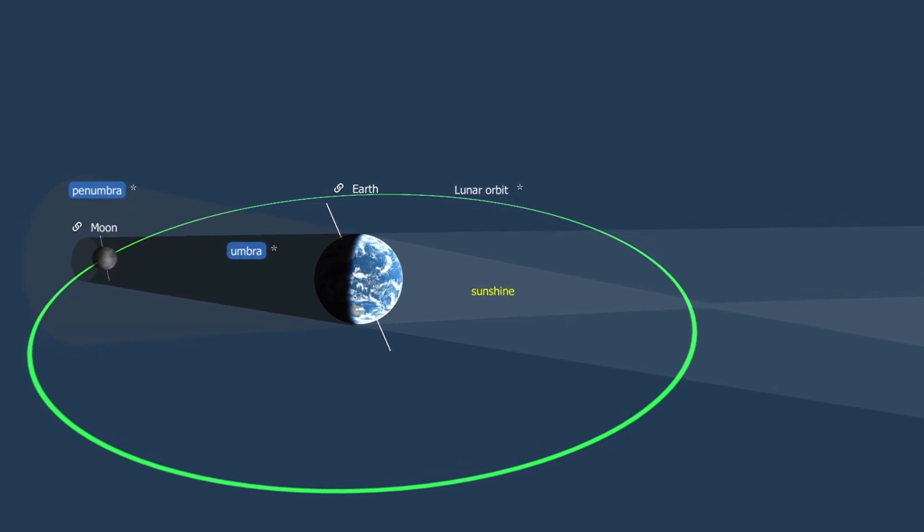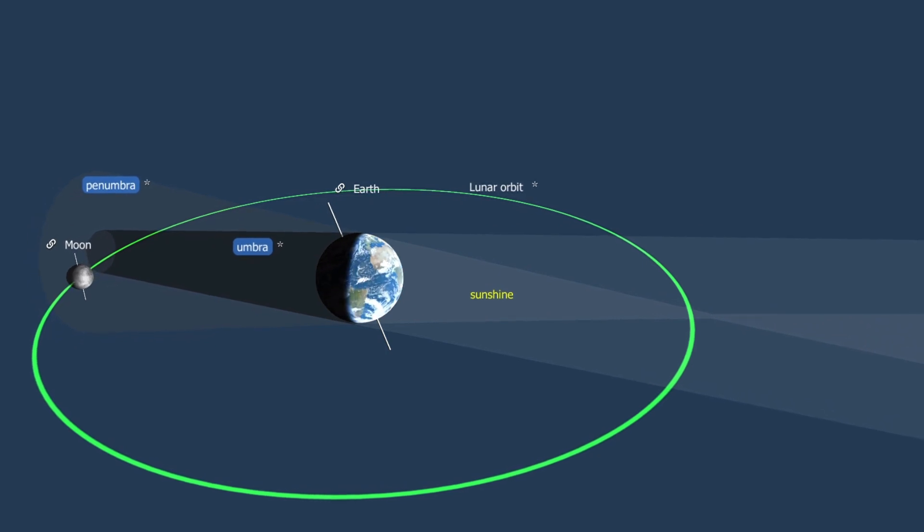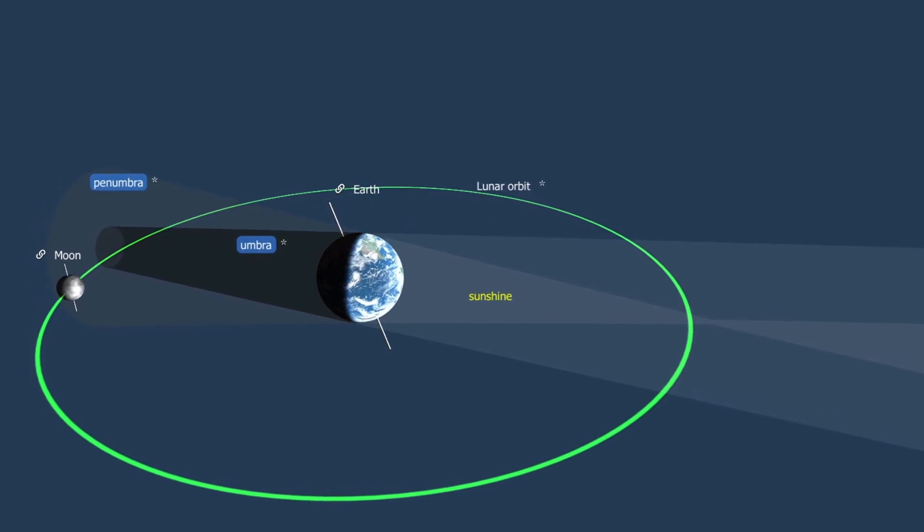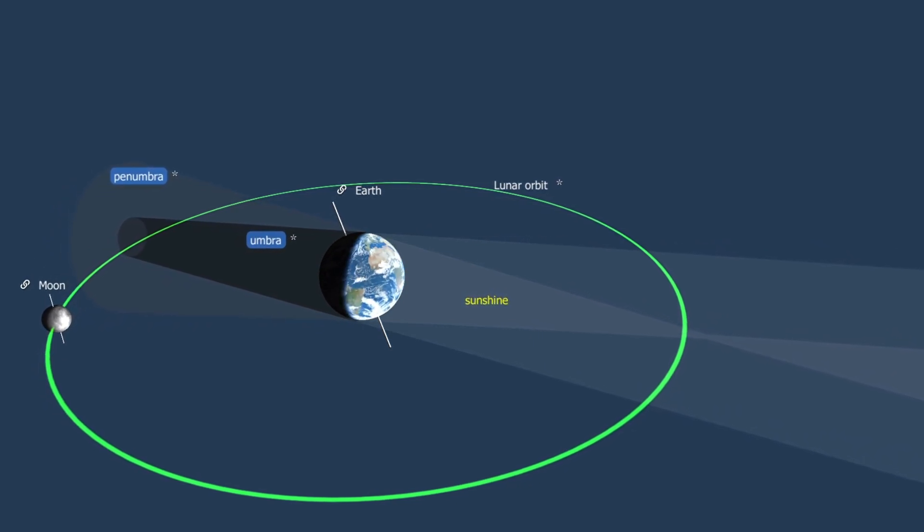Since the Sun is larger than the Earth, the shadow of the Earth is composed of two cone-shaped components. The inner cone, or umbra, is a region of complete shadow which receives no direct sunlight.